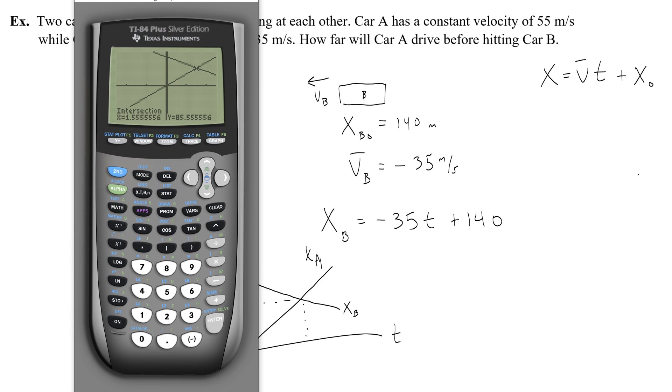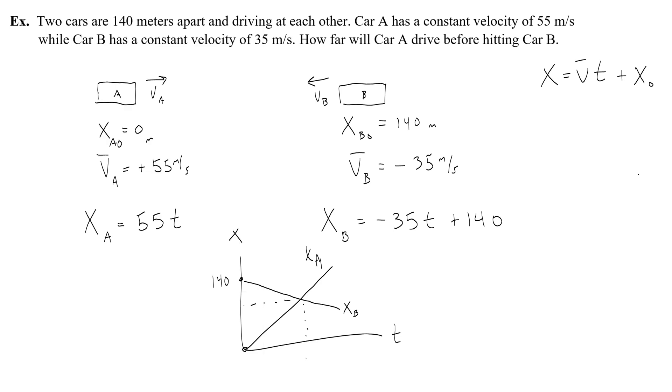And it shows me the intersection. X is 1.5 repeating. Remember that's the time value because the x-axis is our time axis. And then 85.5 repeating. So 1.5 is the time. It's important that you write that down just so I can see that you graphed it. And then 85.5 repeating meters. That is the position. So where they collide is 85.5 meters from where car A started.